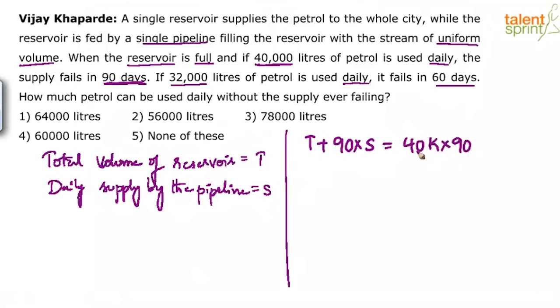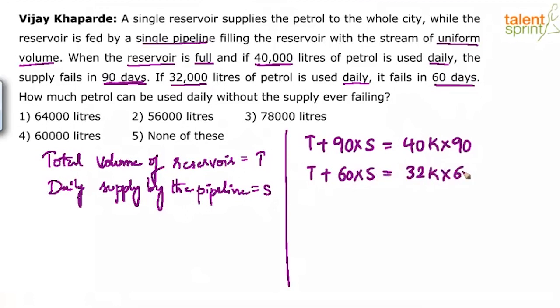Similarly in Case 2, if 32,000 liters is used daily and it fails in 60 days: initially we have T liters, plus for each of the 60 days the pipeline supplies S liters, so T + 60S. This equals the total consumption: 32,000 × 60.